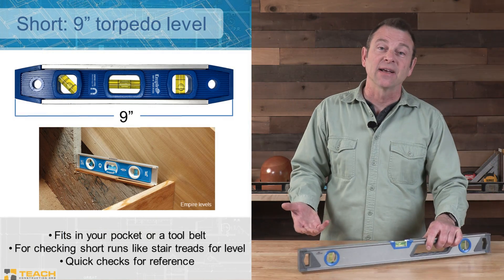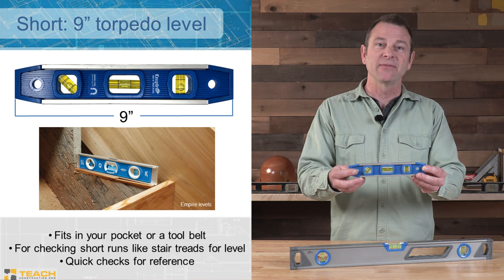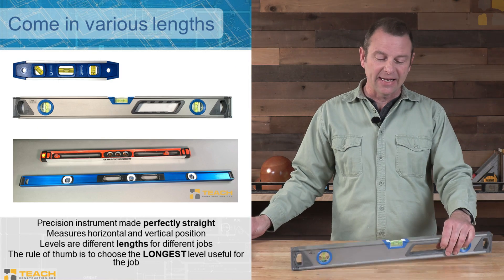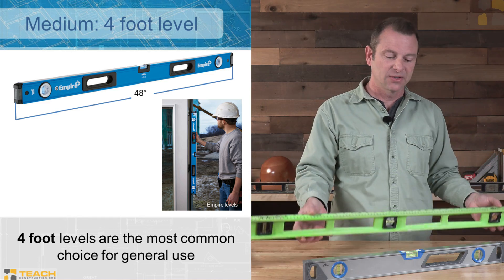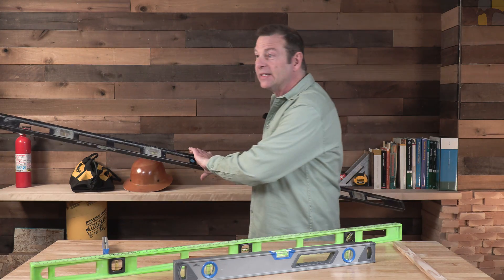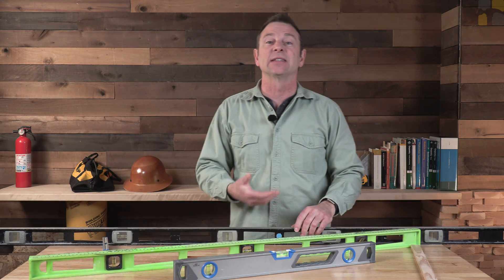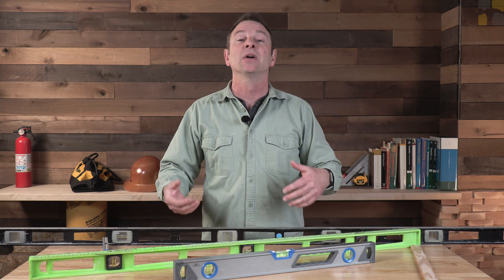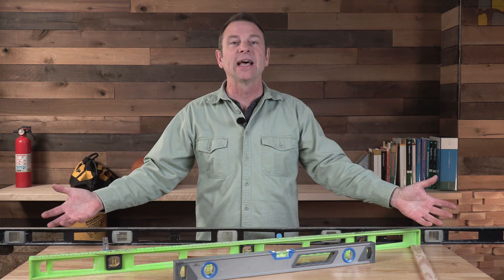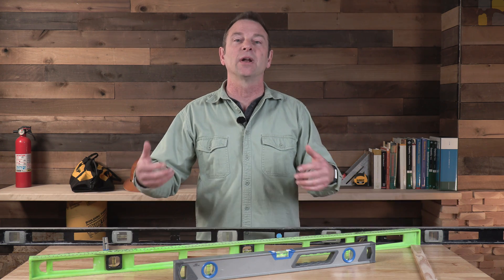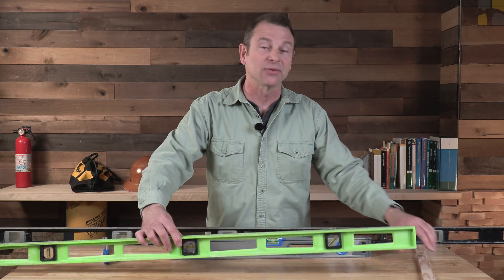There are a lot of different lengths available for levels. Here I have a nine-inch torpedo level for smaller jobs, a two-foot level, a four-foot level for longer surfaces, and a six-foot level for really long jobs. The idea is that you want to choose the longest level possible for the surface you're trying to measure. This table is a little less than five feet long, so I would pick a four-foot level to measure this surface.